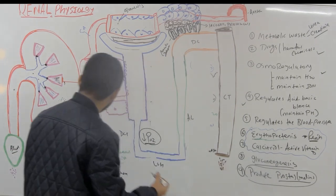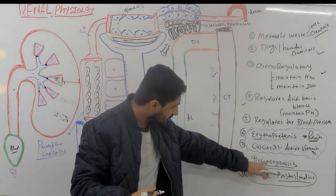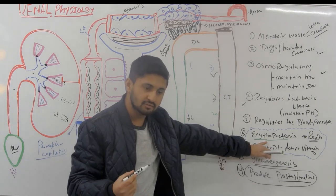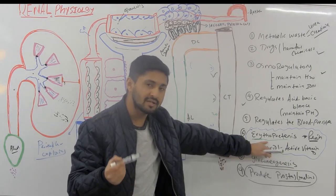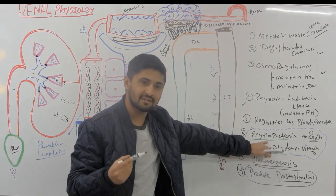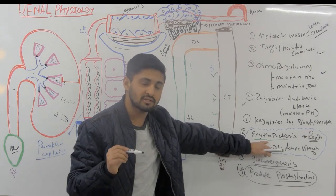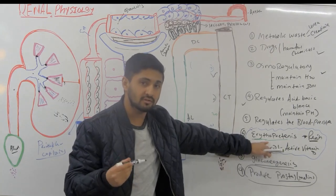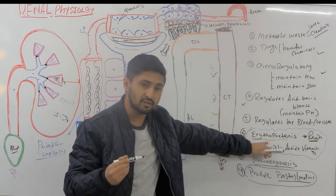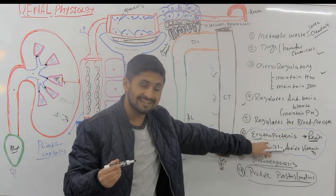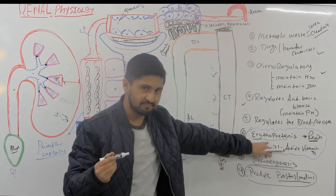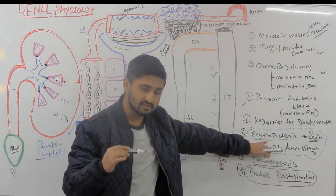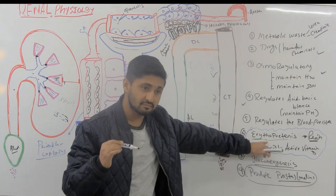Red blood cells are important for carrying oxygen, so this is why the kidney plays a very important role. That's why people with kidney transplants or kidney disease need their blood levels checked. We now have drugs — erythropoietin — that can be given to them. Kidney disease can lead to anemia if erythropoietin production decreases.